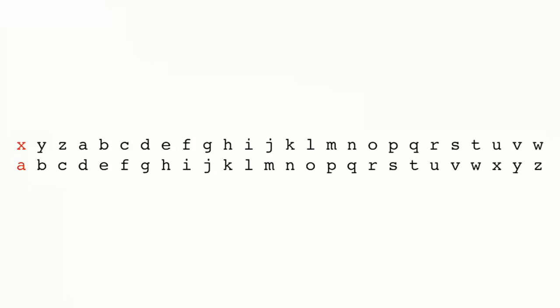Y, and Z, she just wraps around back to the beginning of the alphabet and substitutes X with A, Y with B, and Z with C. So when Alice goes to encrypt her secret message to Bob, namely, 'meet me at the park at 11am,'